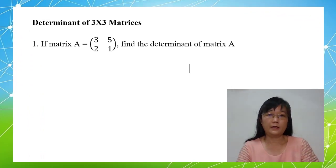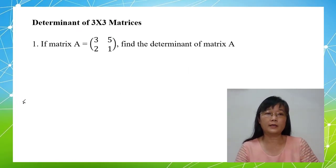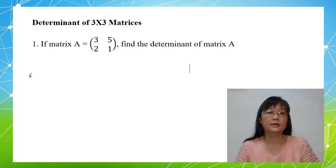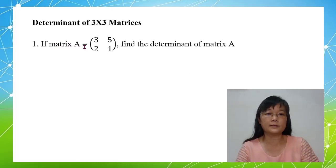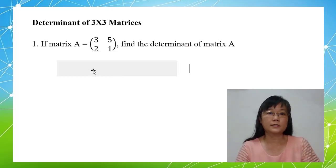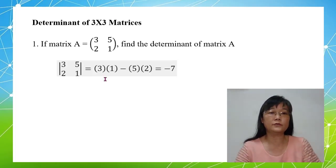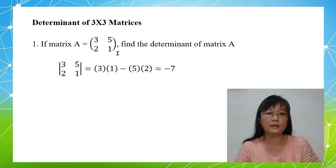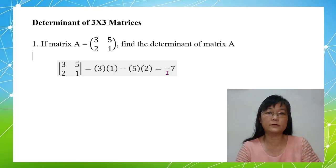In this video, I am going to talk about the determinants of 3x3 matrices. Before we start, let's recall back how to find the determinant of a 2x2 matrix. When we look at this question, if matrix A is given as a 2x2 matrix, find the determinant of matrix A. Since matrix A is a 2x2 matrix, the determinant is equal to AD minus BC. In this case, it is 3 times 1 minus 5 times 2, which equals negative 7.